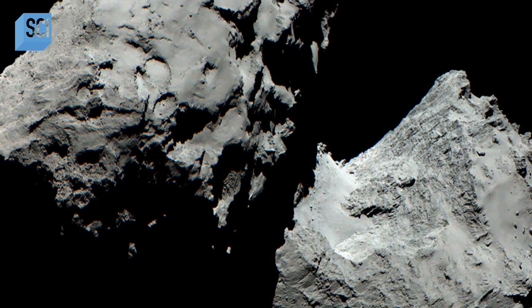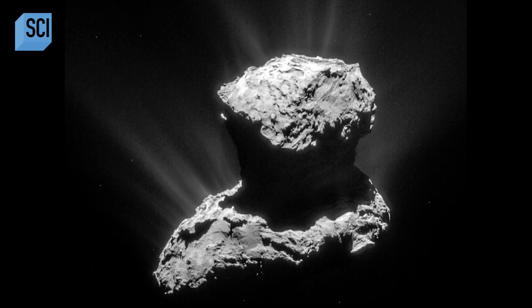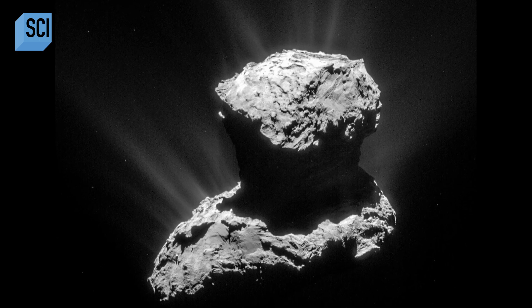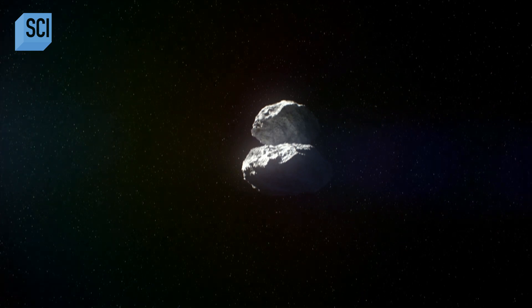Quite simply, arrival at 67P, we expected to see something shaped like a potato, and we found something shaped like a rubber duck. 67P is no ugly duckling, but its strange shape created a problem for Rosetta.